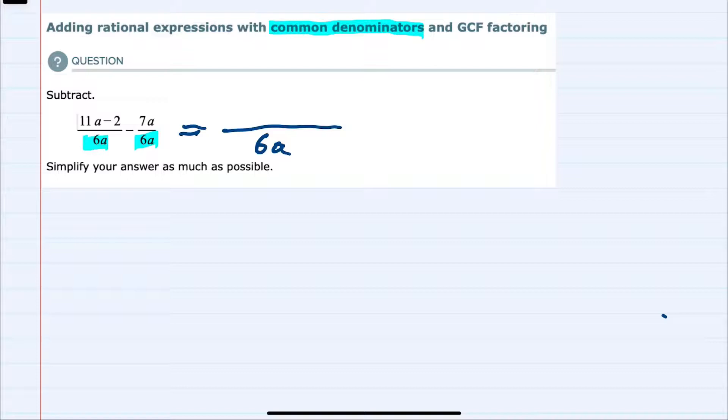In the numerator we would just have the first subtract the second, so we're just going to go from left to right across the top. We would have 11a minus 2 subtract 7a, and from here we could simplify.